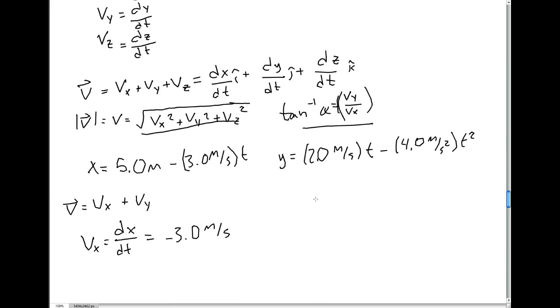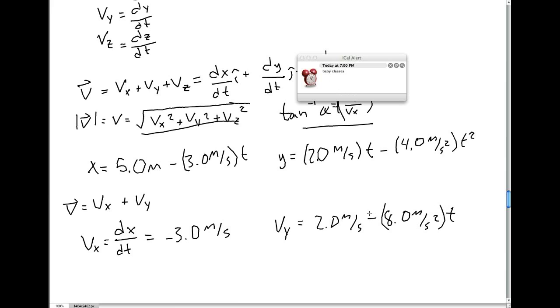Now over here, our y component is a little different. Our velocity in the y direction is going to be 2.0 meters per second, and then minus, take the derivative over here, bring down the 2, that gives us 8 meters per second squared times t. Now you notice, whenever we take the derivative, I end up with meters per second. And over here, I will also end up with meters per second. This is what we want.